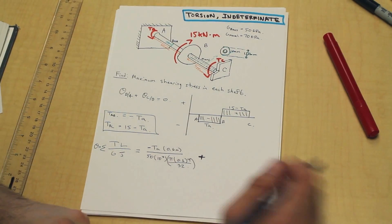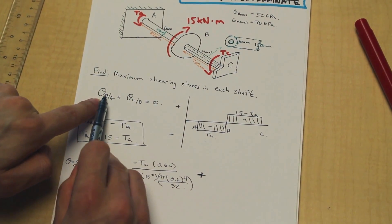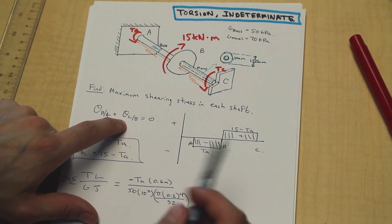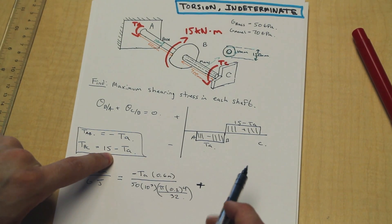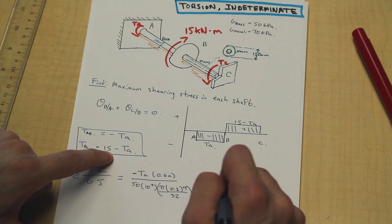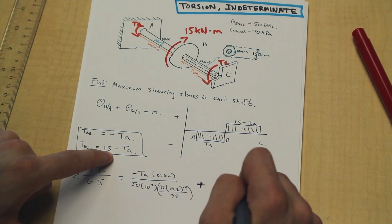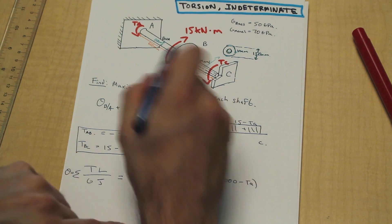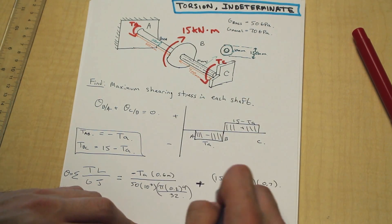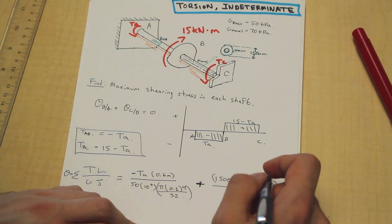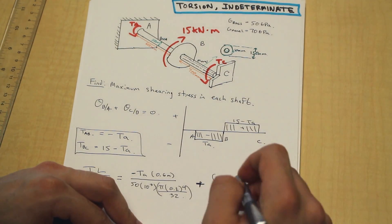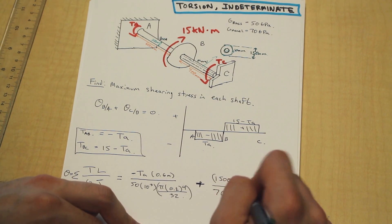So we're going to move on to the section BC of our angle of twist. So that was theta B with respect to A. Now, theta C with respect to B. We're going to come over here, and we have 15 kilonewton meters. We're going to want to change that to newton meters, so we're going to multiply that by a thousand. And that is our T for section BC. Our length is given as 700 millimeters or 0.7 meters. And let's go to our GPa given for the Monel, which is 70.